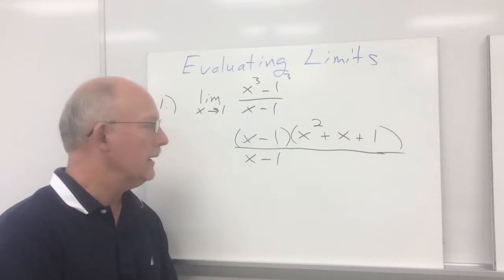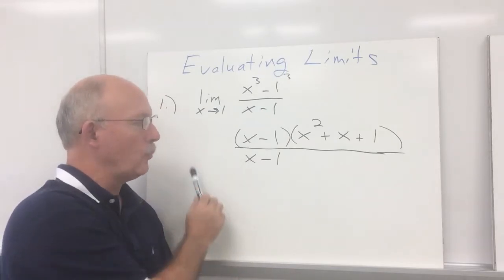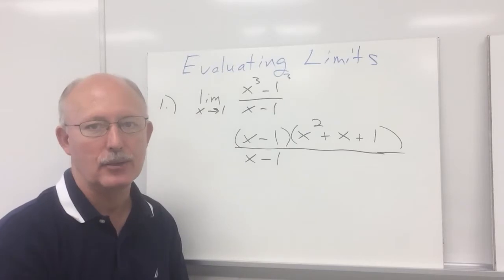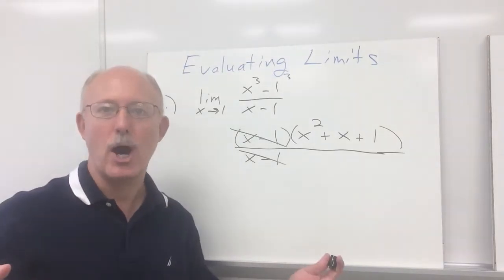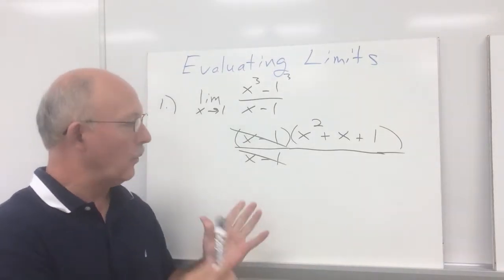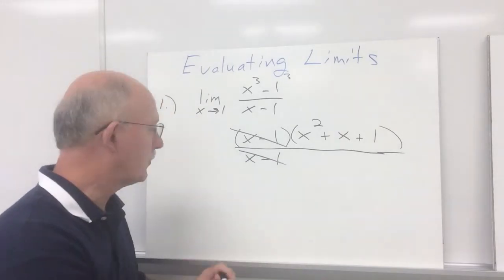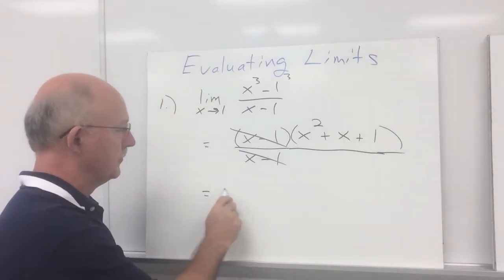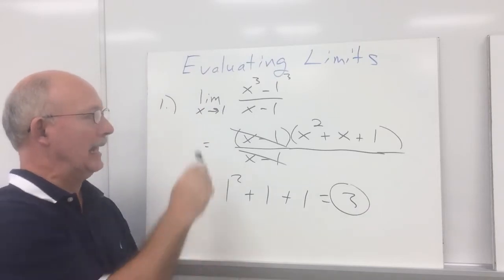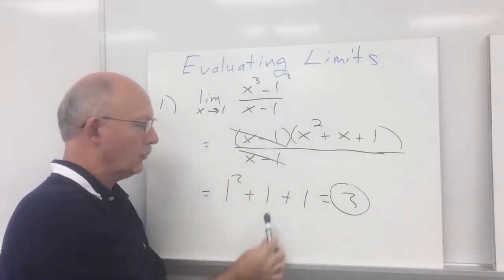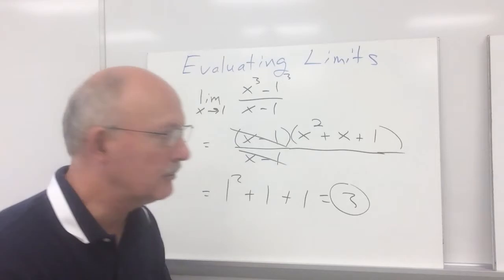The presence of a hole indicates we should end up with the same factor in the numerator as in the denominator. We have x minus one in our numerator and x minus one in the denominator — that's our hole. So we cancel those out, and the hole is gone. Now let's substitute one in for x into the remaining expression. One squared plus one plus one gives us three. So the limit as x approaches one of x cubed minus one over x minus one is three. You have to remove the hole before direct substitution will work.